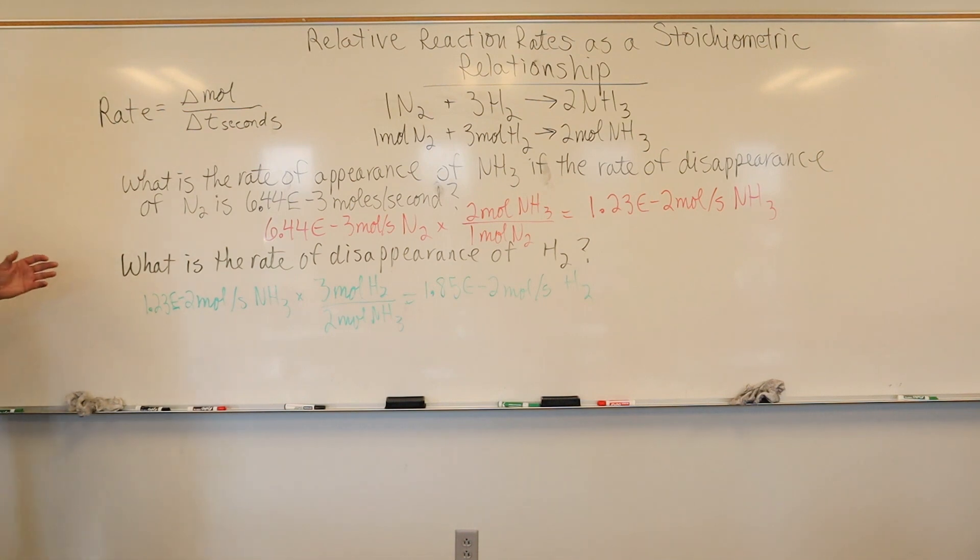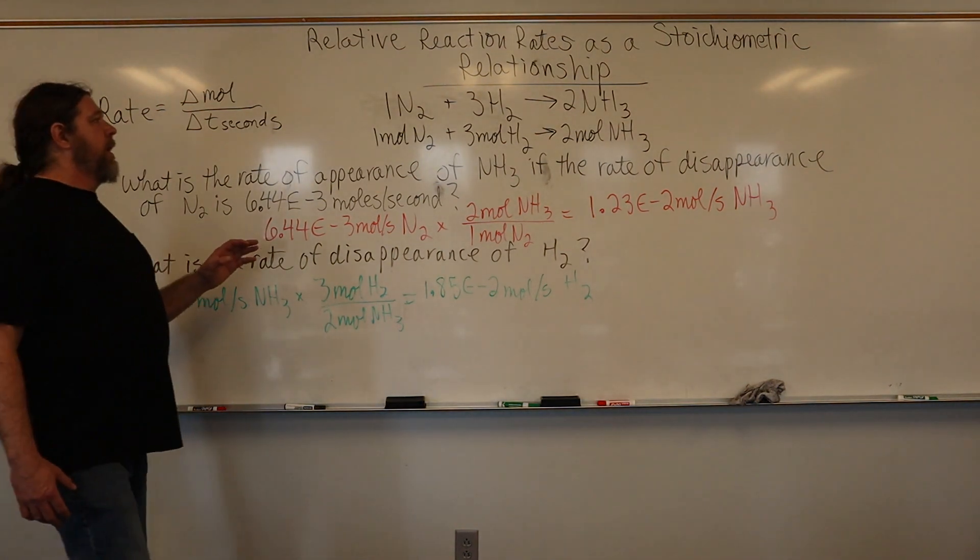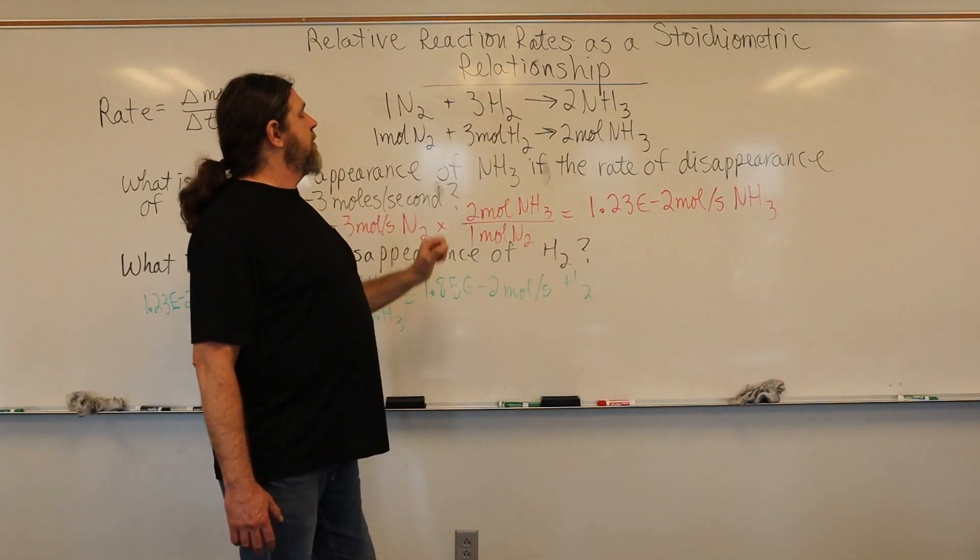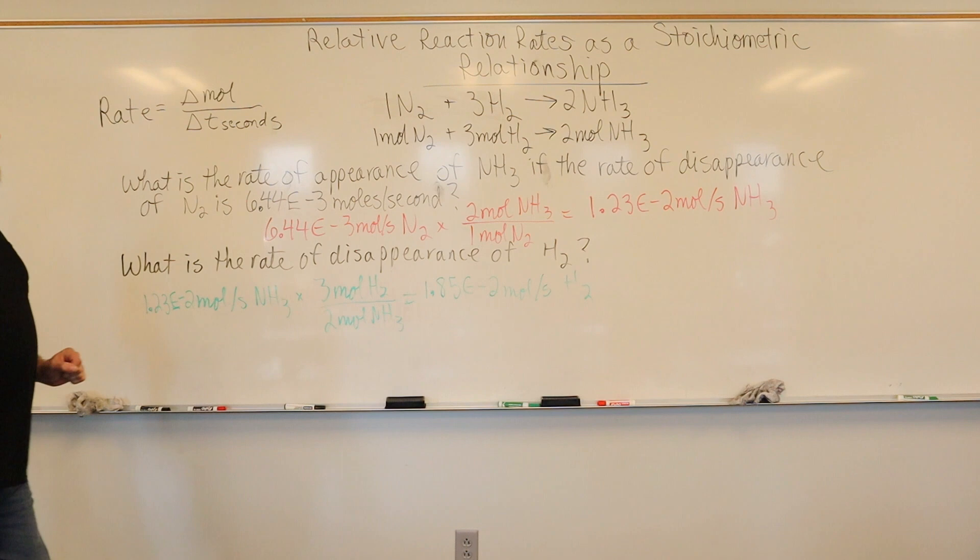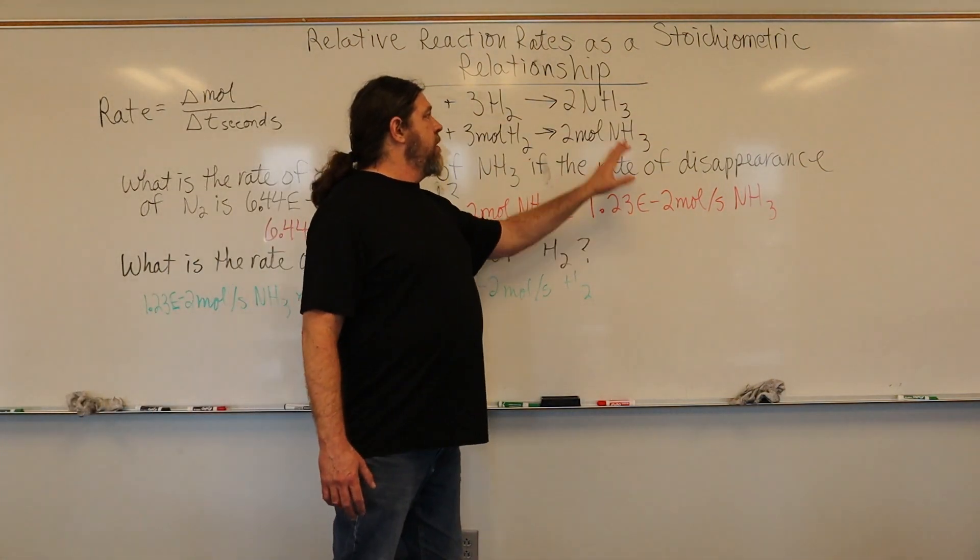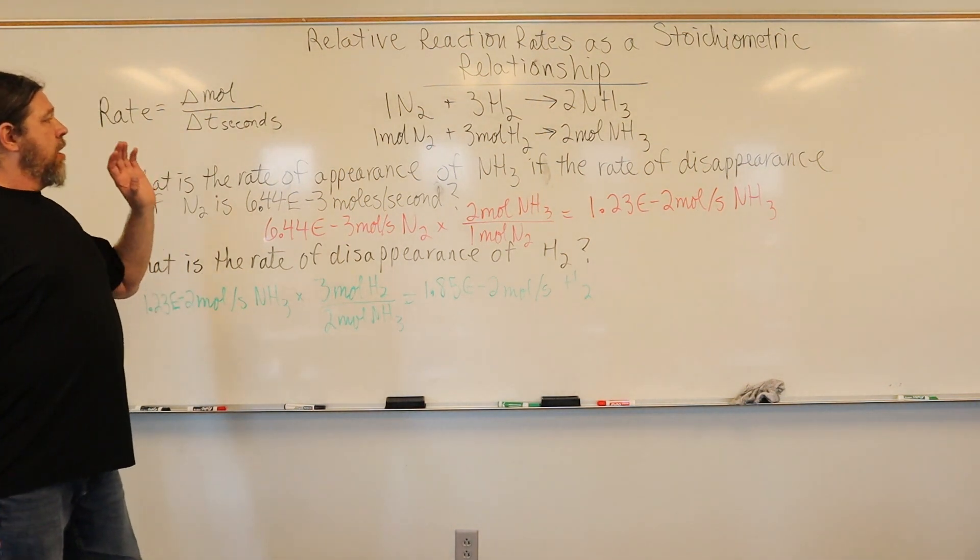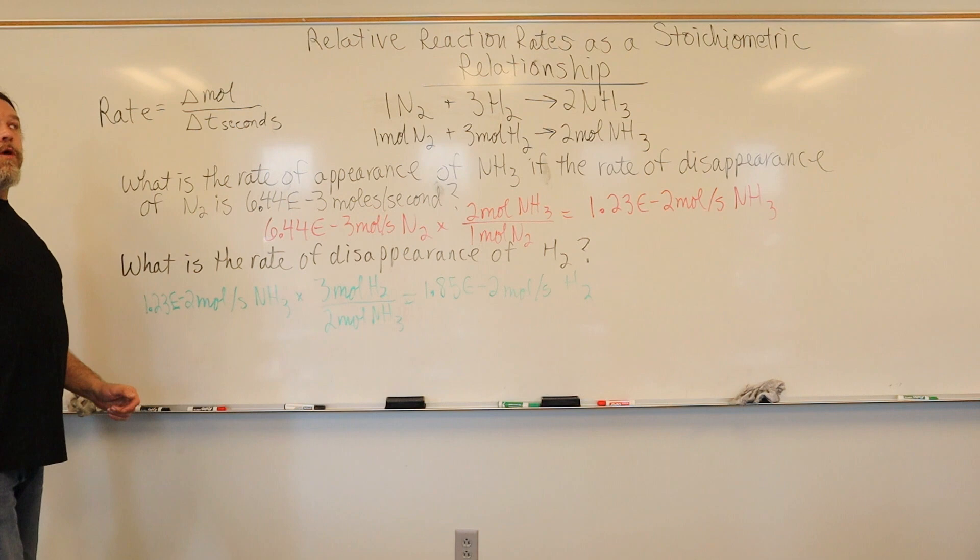Now we can also work it out for the third species in this reaction, the hydrogen. Since it's the unknown, we can either use this value of the nitrogen as our known, or we could use the ammonia as the known. It doesn't matter because if we simply are able to preserve the molar relationship unknown over known,